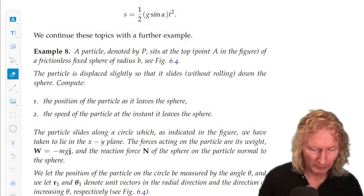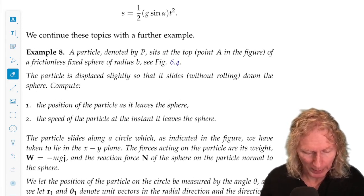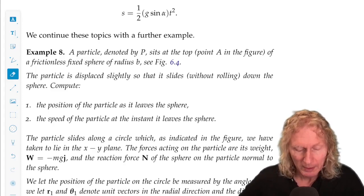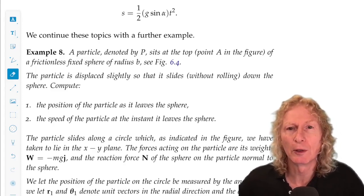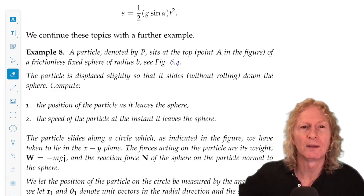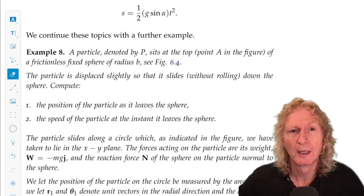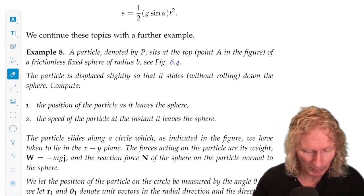Welcome back to the fourth lecture of Chapter 6, where we're going to discuss Example 8. Here's the situation we have. We have a particle that sits on top of a sphere, and we slightly displace it so that it slides down the sphere, doesn't roll, and there's no friction. I'll give you a picture in a minute.